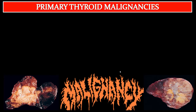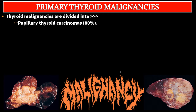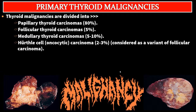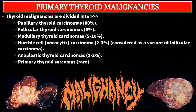Primary thyroid malignancies are divided into: papillary thyroid carcinomas accounting for 80%; follicular thyroid carcinomas, 5%; medullary thyroid carcinomas, 5% to 10%; Hürthle cell oncocytic carcinomas, 2% to 3% (considered a variant of follicular carcinoma); anaplastic thyroid carcinomas, 1% to 2%; primary thyroid sarcomas, rare; and primary thyroid lymphomas, also rare.